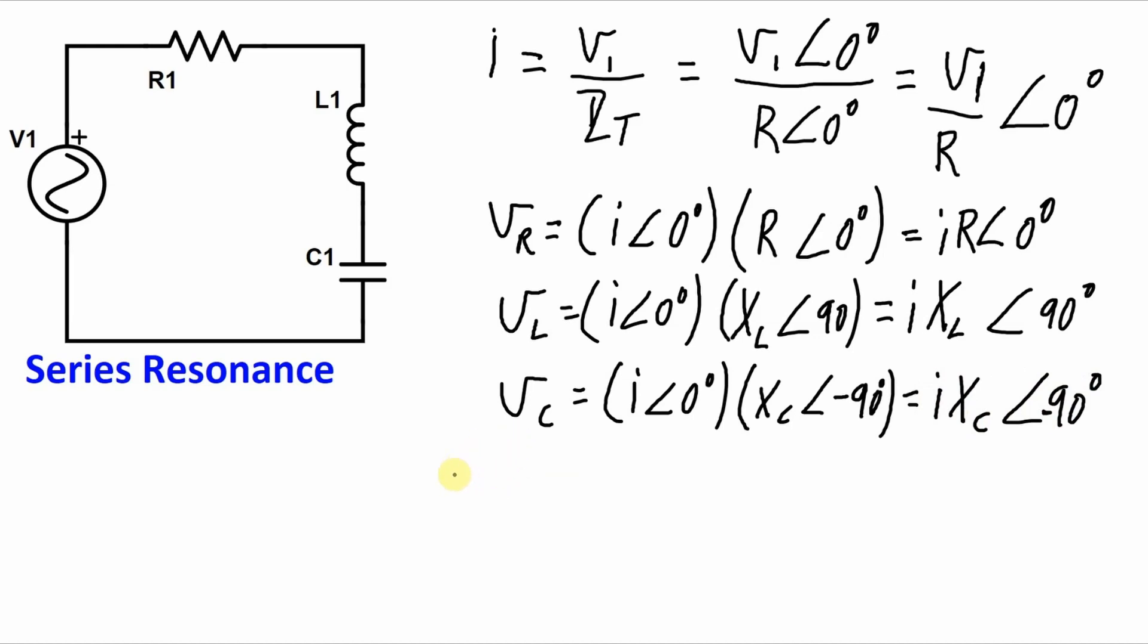And remember, at resonance, XL is equal to XC. So what that means is those two values there, the magnitudes of the voltages are equal, but they are 180 degrees out of phase. So that means they are going to completely cancel each other out. So effectively, at resonance, the voltage across that entire thing there is zero.